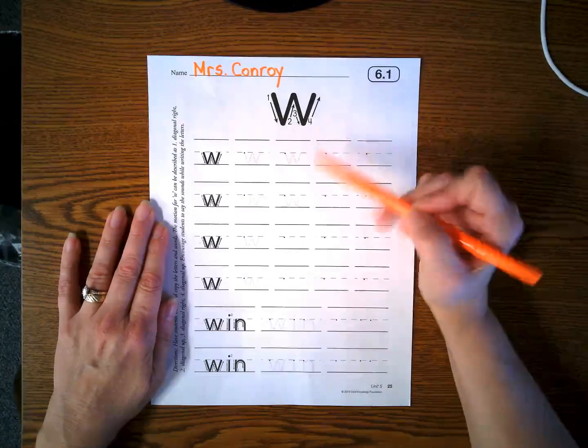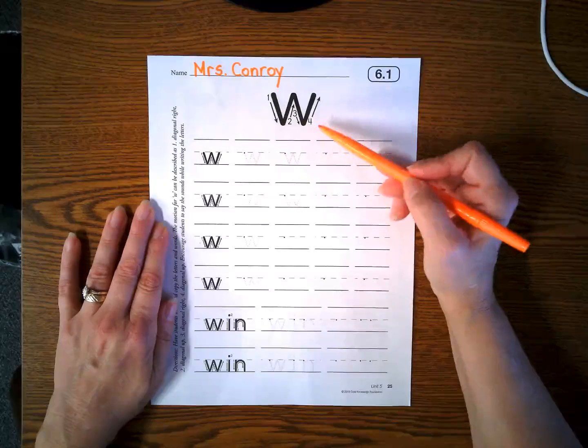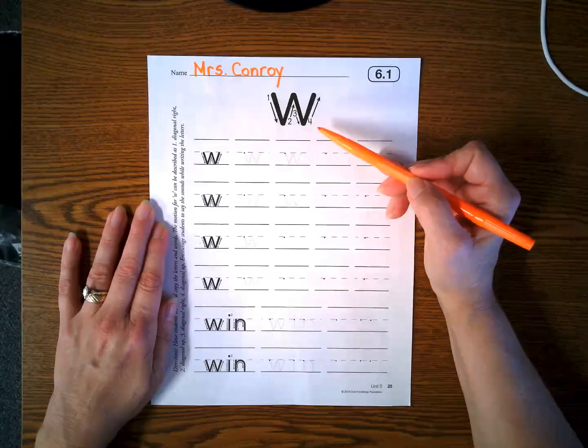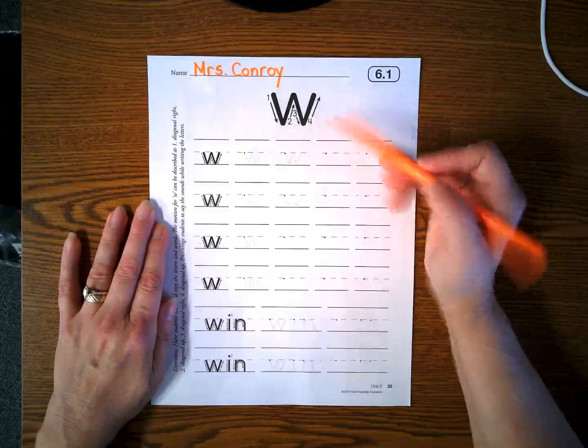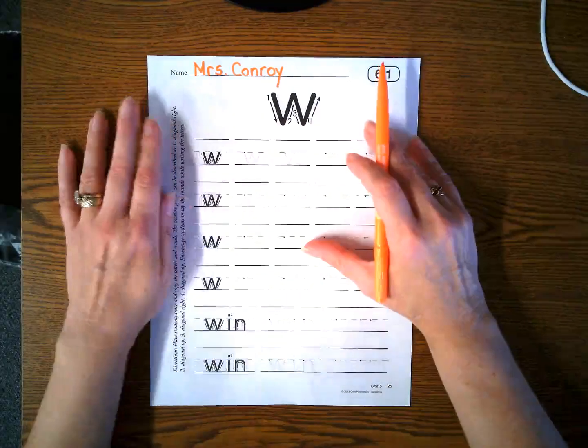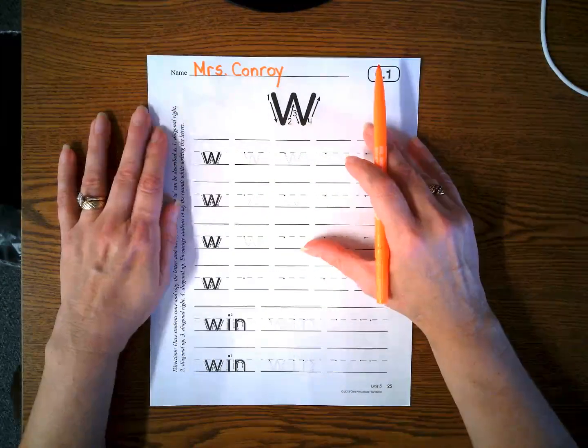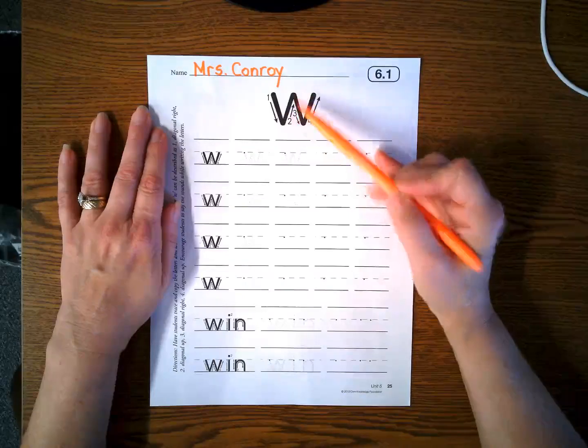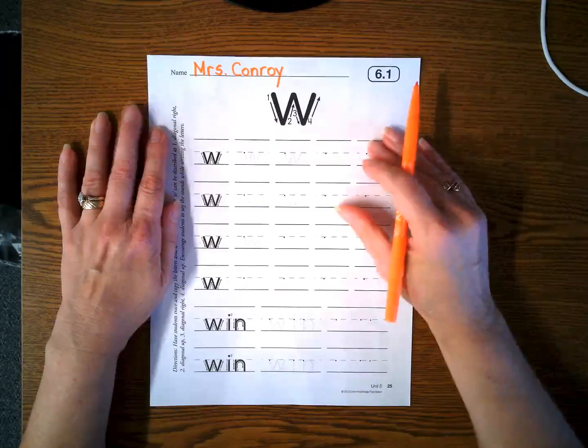This is a lowercase w. W says w, w, w. When you write a lowercase w, there are a lot of diagonal lines and we sure have practiced those.